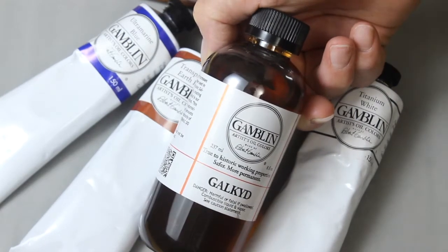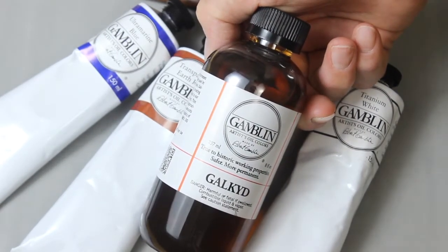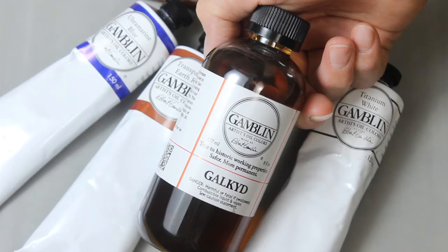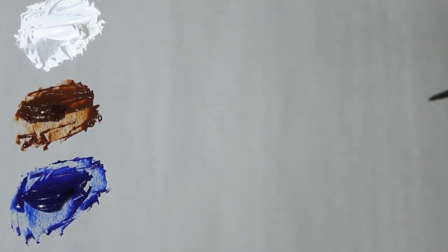I'll also be adding Galkid to my colors. Galkid speeds the dry time of my oil paints. I've taken a moment and squeezed out my colors and mixed in the Galkid. I'm careful not to add more than 25% Galkid to each color.